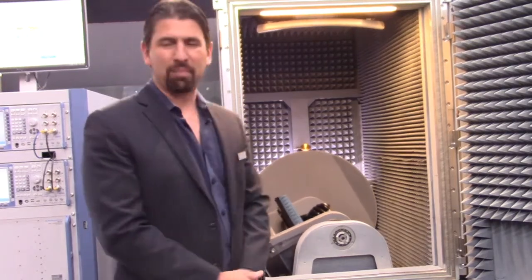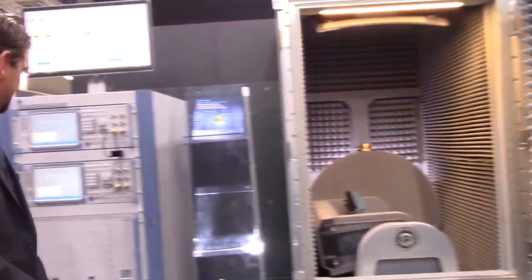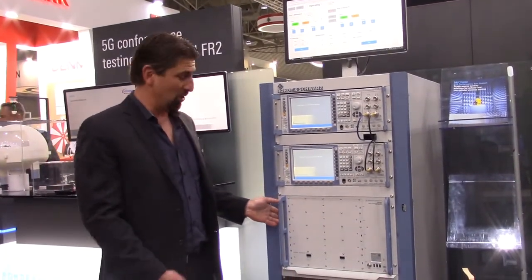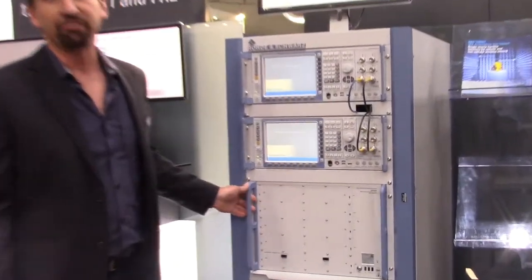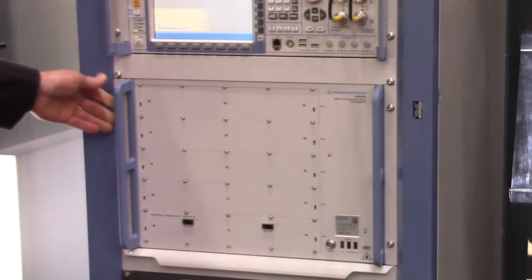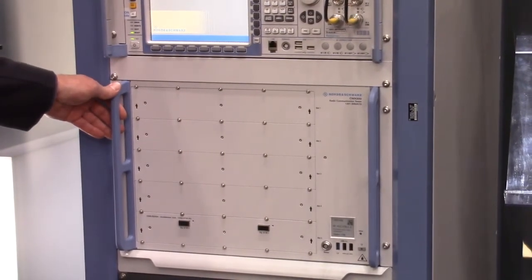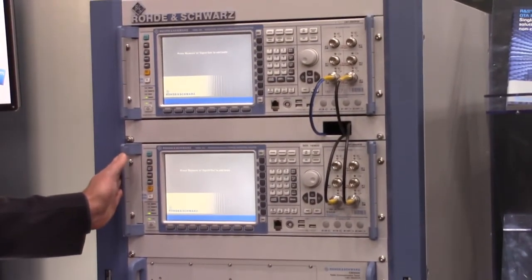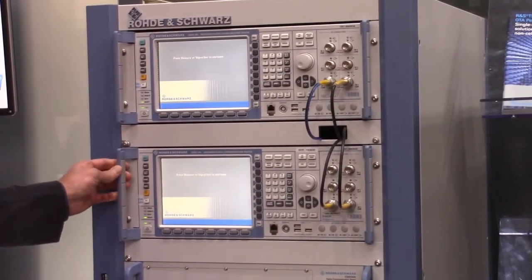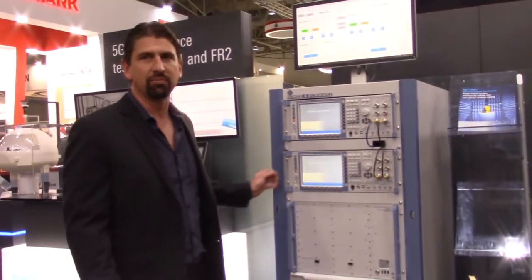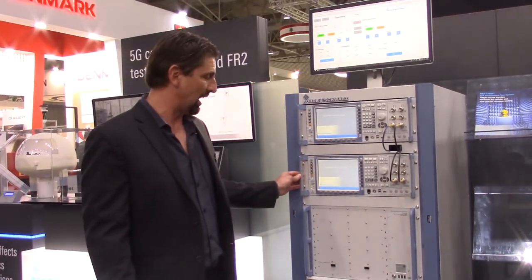If I take a step back and go back to the test system here. What we have is the introduction at this show of the CMX 500 5G network emulator which makes up a very important part of this test system. It's actually doing all the 5G baseband and it works in conjunction with the CMW 500 which covers the LTE and also does the sub-6 RF conversion using the same TRXs and RF front ends that customers already have.